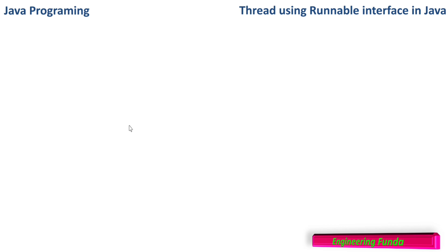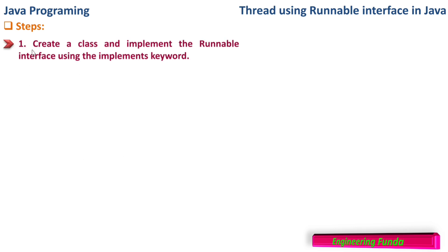Let us first look at the steps of creating a thread using the Runnable interface. The first step is to create a class and implement the Runnable interface using the implements keyword. Since Runnable is an interface, we have to implement it in a class, whereas with the Thread class approach we extended the Thread class and wrote code inside it. Here, since it is an interface, we have to first implement it into a class.